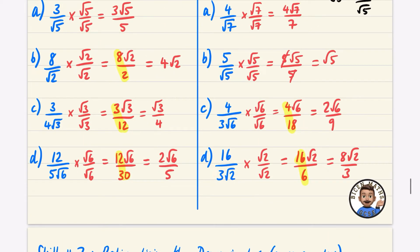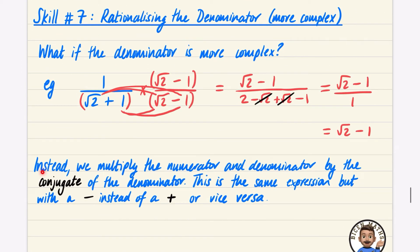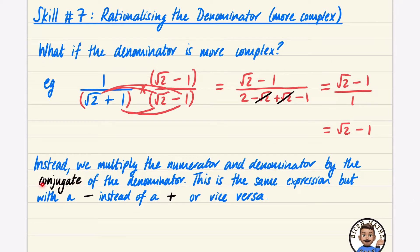So instead of multiplying by the same number on the top and bottom, we instead multiply the numerator and denominator by something called the conjugate of the denominator. This is the same expression as the denominator but with a minus instead of a plus, or vice versa — you switch whatever the middle sign is. This is called the conjugate — you come across this term in further maths or A-level. It's just a fancy word meaning the same expression but switching from plus to minus. This exploits the difference of two squares.